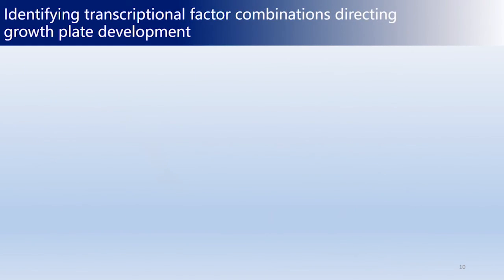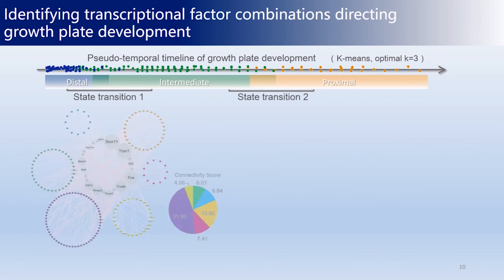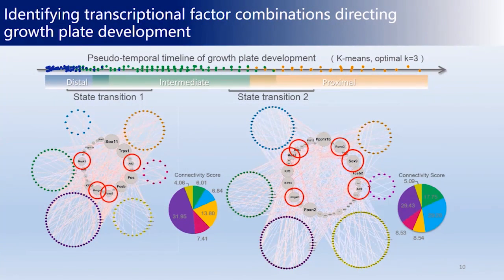Applying this methodology, we divided the growth plate development process into two main state transitions. For each transition, we predicted the potentially important transcriptional factors based on their connectivity score. It is notable that several important non-transcriptional factors in growth plate development were successfully recaptured by this unsupervised approach.